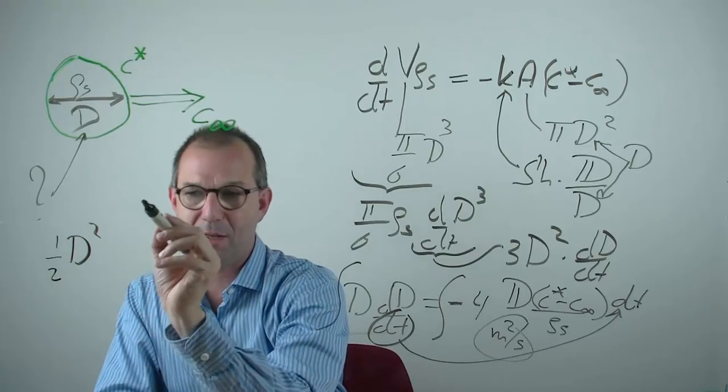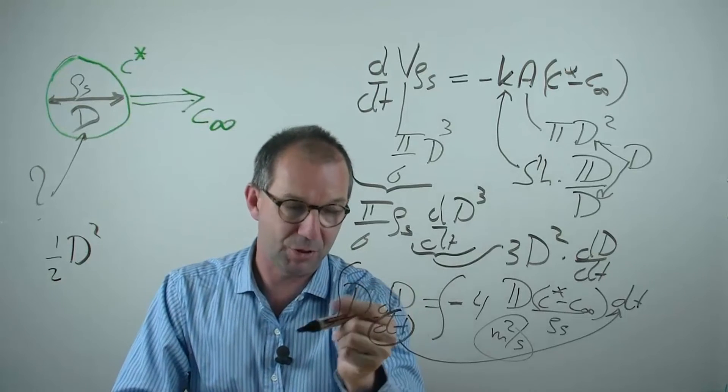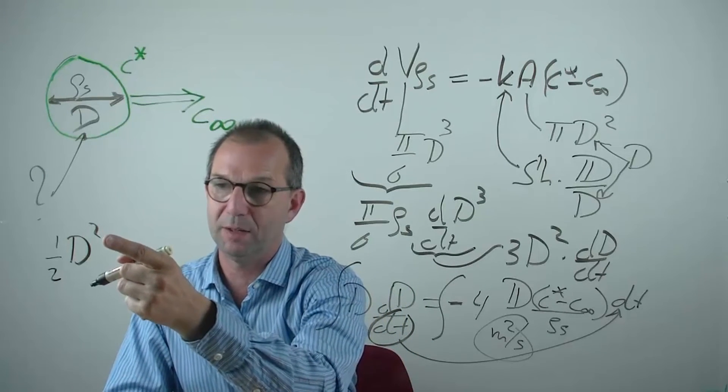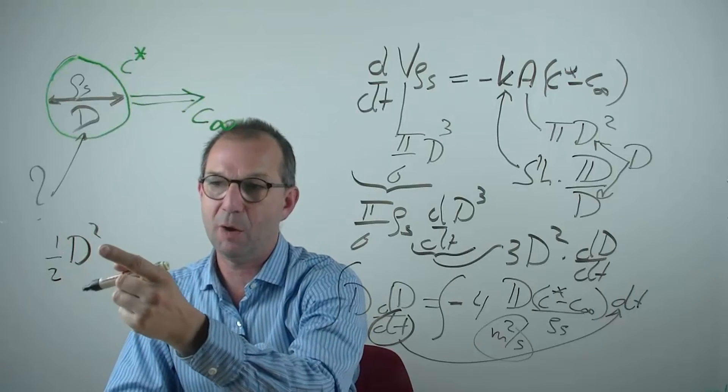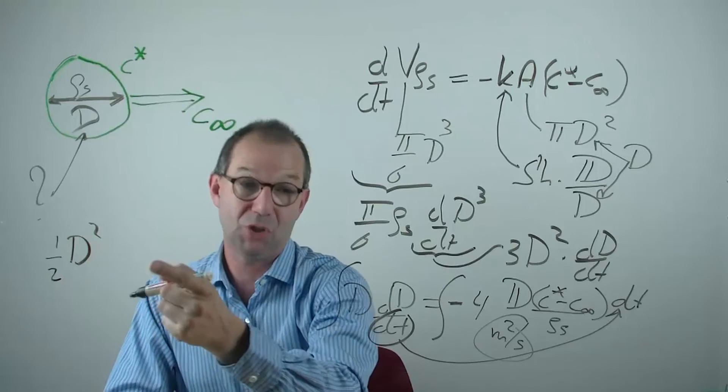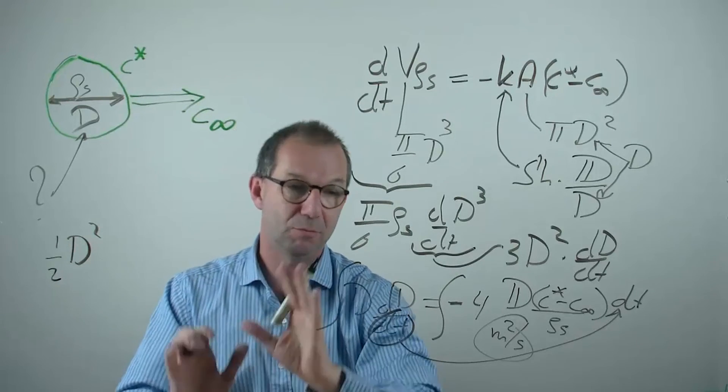Let's check whether that's correct. If I differentiate this, I should get back what is in the integrand. Differentiating D squared gives 2 in front, killing the half. And I'm left over with D times the dD as is written here. So this is fine.